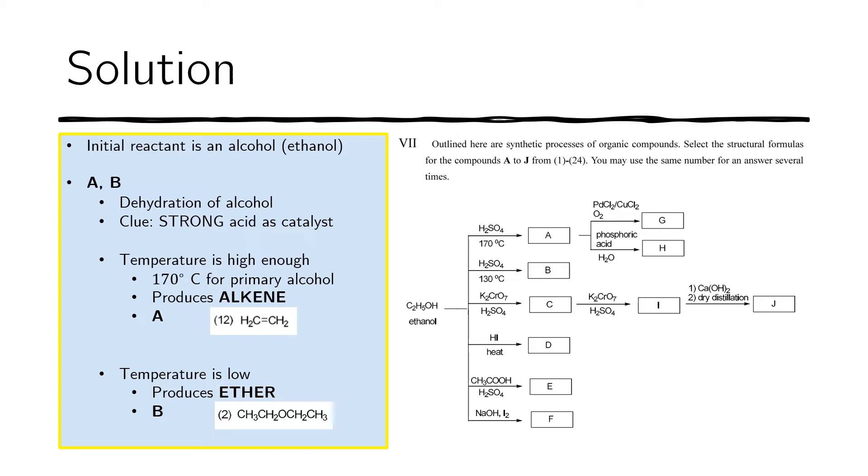First, let us look at the first two reactions for A and B. What we have is an alcohol, ethanol, and we have sulfuric acid as the catalyst. That is a clue because we have a strong acid, a clue that what we have is a dehydration of alcohol. Dehydration takes away the OH group. If you have a primary alcohol like this, a primary alcohol is one where the OH group is attached to only one alkyl group. Normally that means the OH group is at the end of the chain.